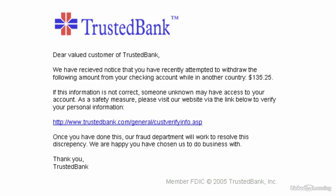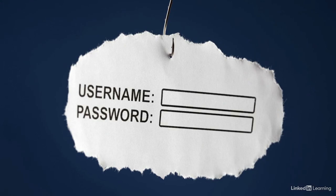The most common phishing technique is to send a fraudulent email to a targeted user. The email is designed to look like it came from a trusted entity, and it will often appear urgent so the recipient will quickly open it. Typically, the email will contain a manipulated link that looks like it goes to a real website. If the user clicks the link, it goes to a forged website designed to look like the real thing. Once there, the target will be prompted to enter their username and password, and if they do, the attacker will now have their credentials.